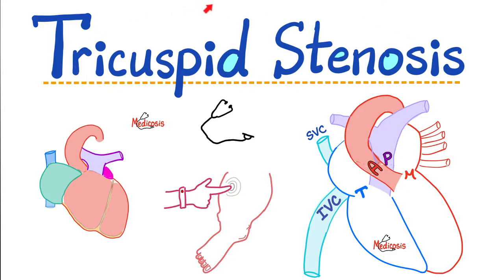Then we started our series on valvular heart diseases. Today's topic is tricuspid stenosis. Stenosis means narrowing — narrowing of the tricuspid valve — which makes it harder for the right atrium to pump blood to the right ventricle during ventricular diastole. What are the causes of tricuspid stenosis? What are the symptoms? How can we diagnose it? How can we treat it? Let's find out.